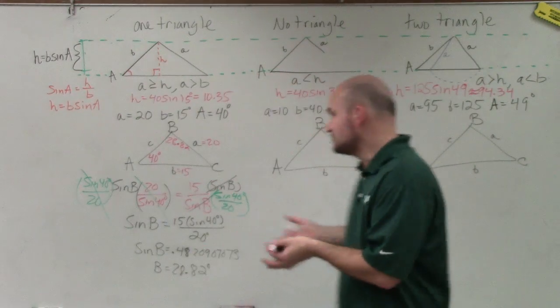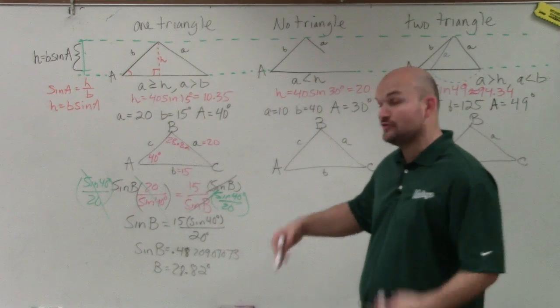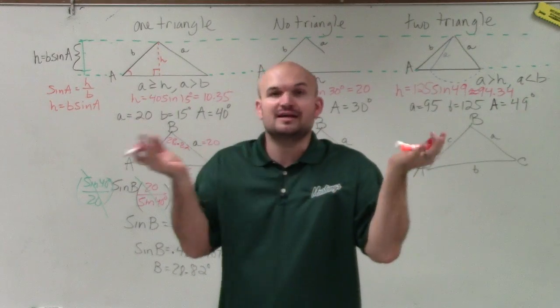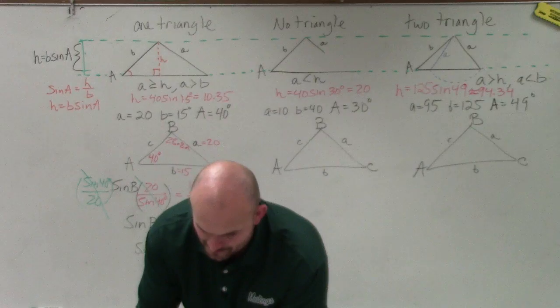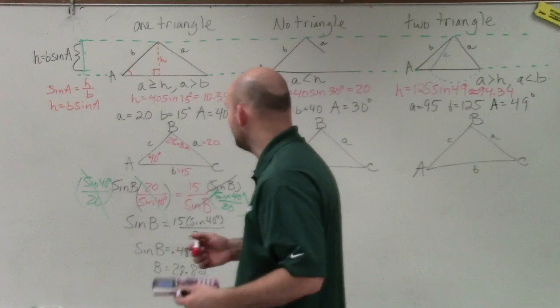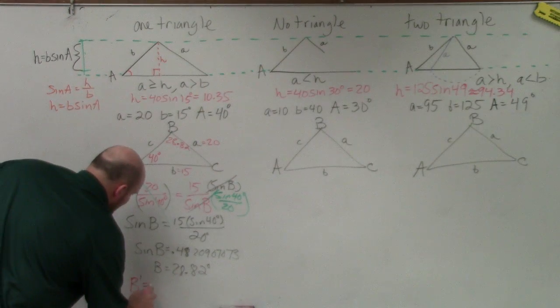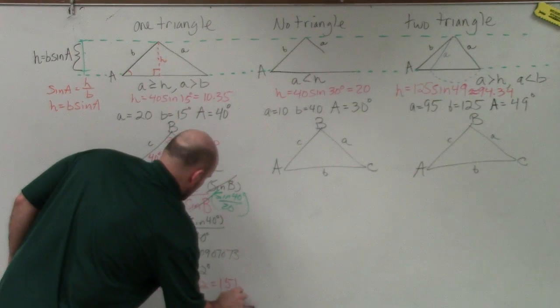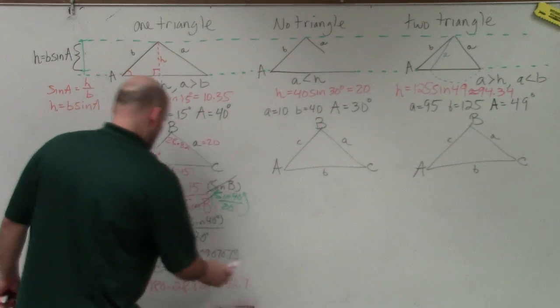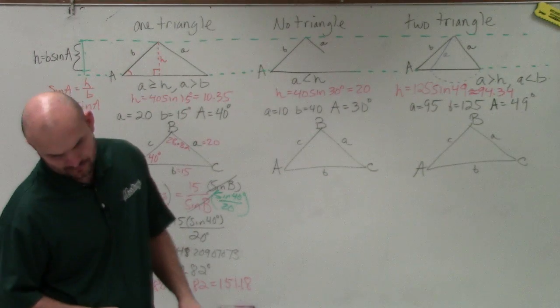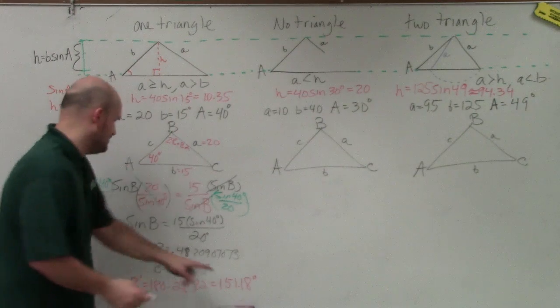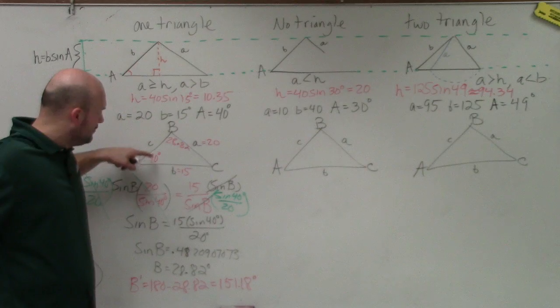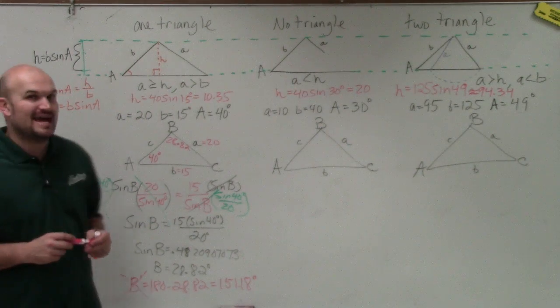Now, what we're going to do to determine if it's one triangle or two triangles, what you could do is now go ahead and subtract that value from 180 and see if you could use that other angle. Because both of those angles, the angle in the first quadrant as well as the angle in the second quadrant, the sine value is going to be exactly the same. So if I did 180 minus my angle, I would have 151 degrees. So 180 minus 28.82 is equal to 151.18 degrees. Well, the problem with me using B prime is if I plug in 151.18 in for this angle, 151.18 plus 40 is over 190. So therefore, B prime cannot exist. Therefore, I can only use the angle B. And that is it.